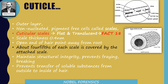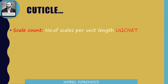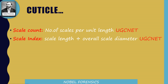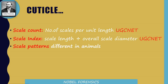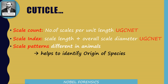There are a few important terminology related to the cuticle. Scale count means the number of scales per unit length. Scale index is scale length divided by overall scale diameter. These two are previous questions in UGC NET. Scale patterns differ in animals and humans, and based on these scale patterns we can identify the origin of species — whether the hair is human or animal hair.